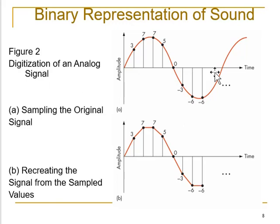More about this you will understand from the course of digital communication, which shows how a signal can be sampled and quantized. Quantization is nothing but sampling in amplitude. Both the processes of sampling and quantization have to be performed to represent a signal in digital form. Figure A shows sampling the original signal and figure B shows recreating the signal from the sampled values, all based upon the sampling theorem. To represent a sound waveform in binary, you must perform both sampling in time and quantization in amplitude.